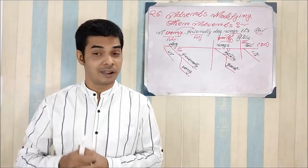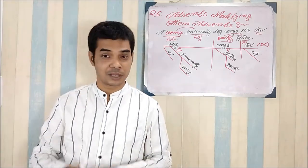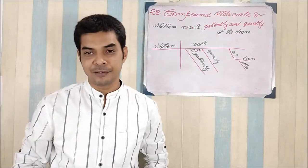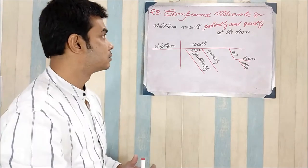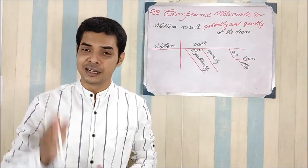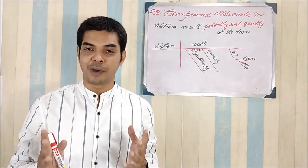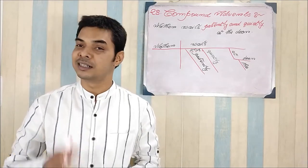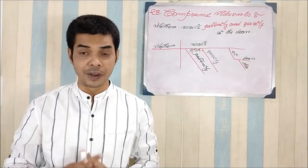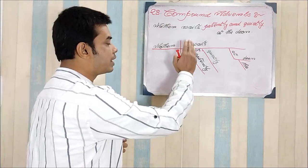That completes Rule 27. Now we move to Rule 28 — compound adverbs. Yes, we have already faced compound subjects, compound objects, compound adjectives — so of course we face compound adverbs as well. It is not tough. Read the sentence: 'Mother waits patiently and quietly at the door.' Yes, our mothers always do this — patiently and quietly wait.